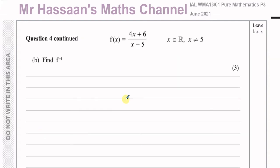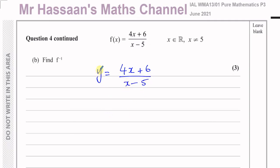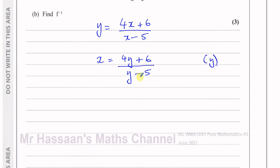For part B, we have f(x) = (4x + 6)/(x − 5) and we have to find the inverse function. The first step is always to write y instead of f(x), giving y = (4x + 6)/(x − 5). The second step is to swap x and y — everywhere you see y write x, and everywhere you see x write y — then make y the subject.